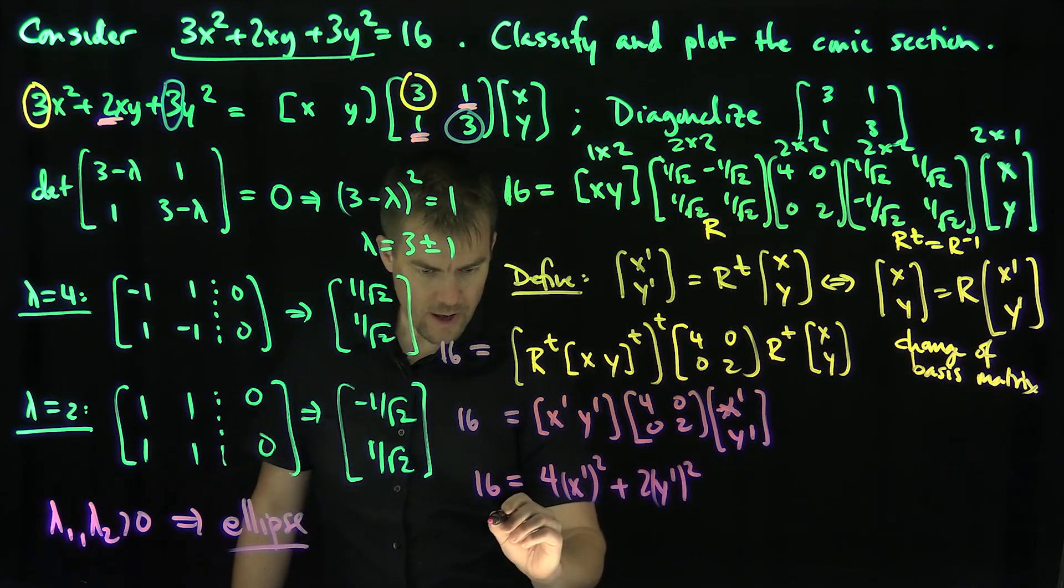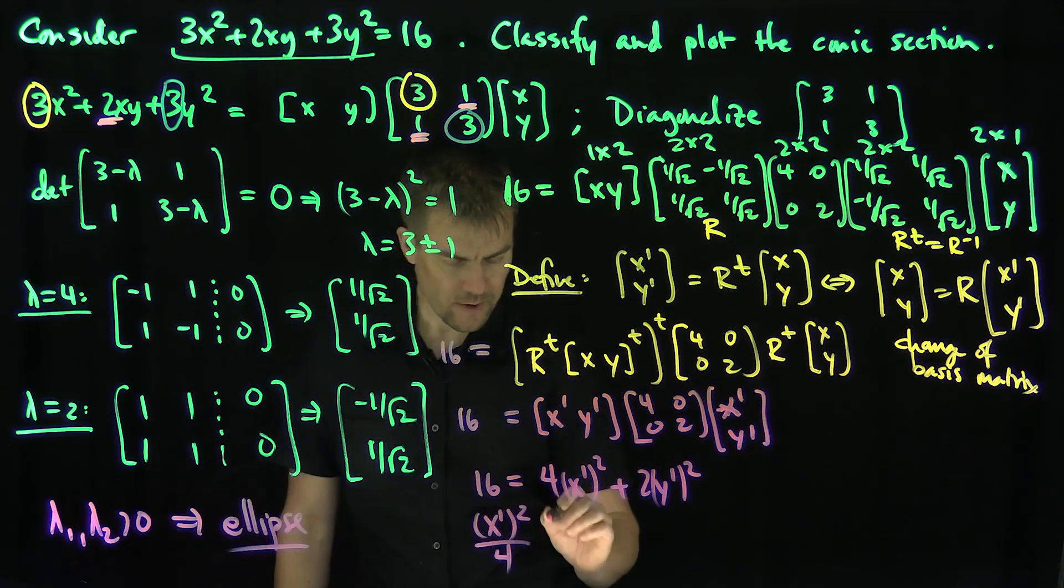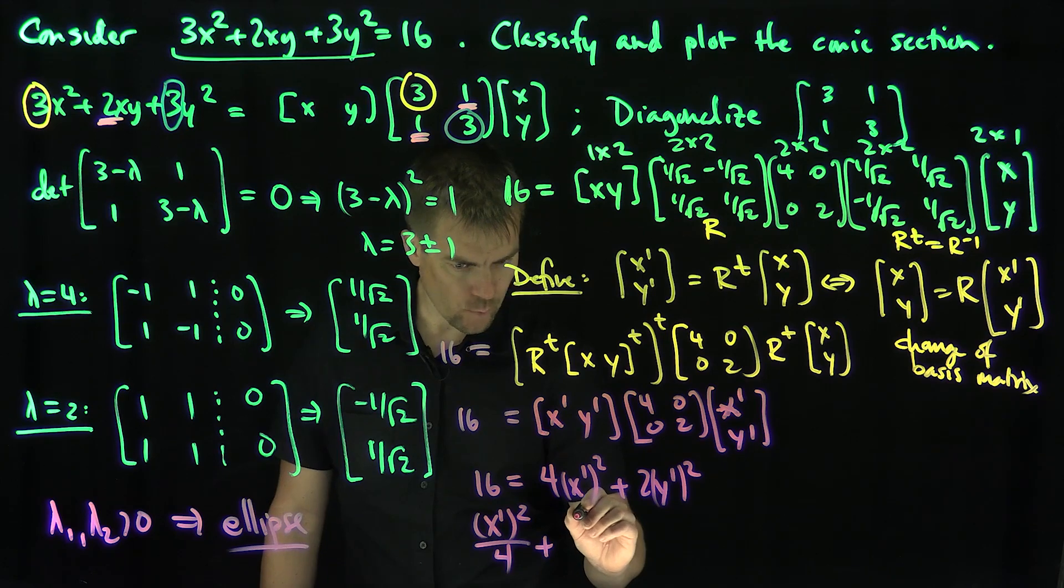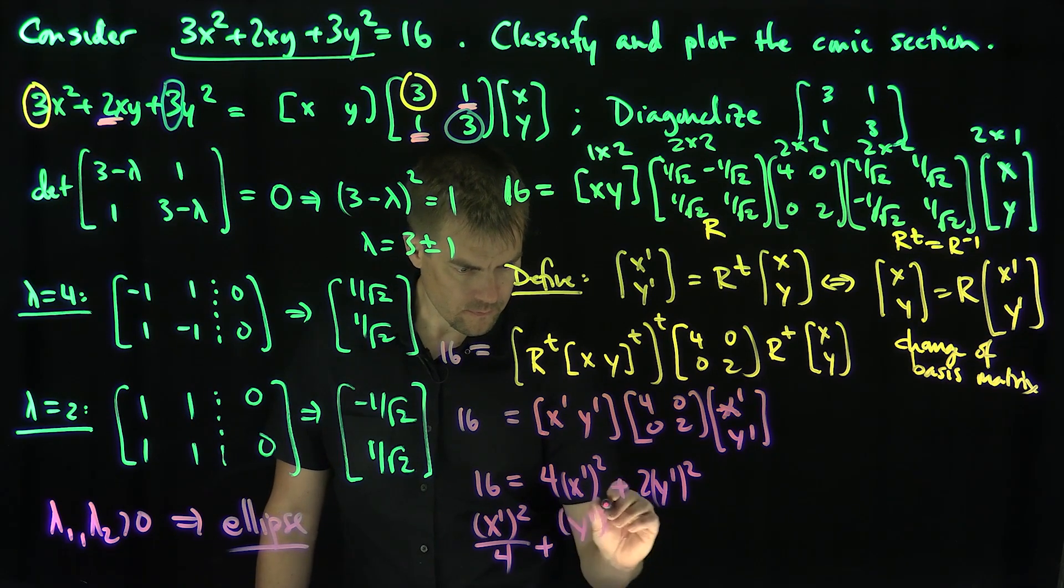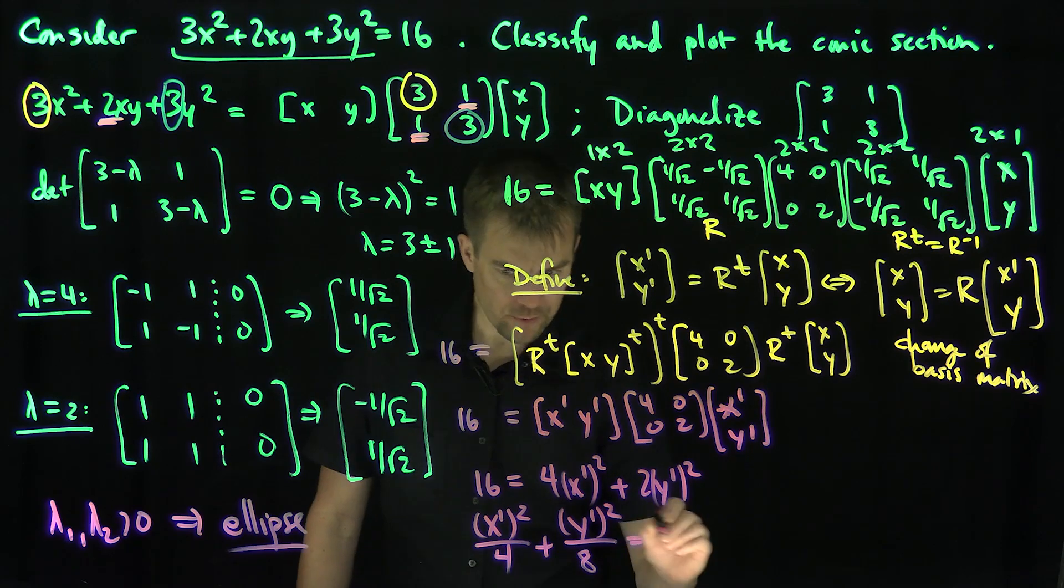If we divide, we have (x')²/4 + (y')²/8 = 1. Great.